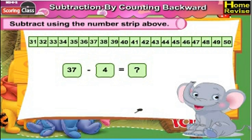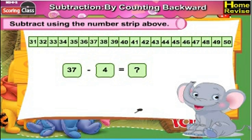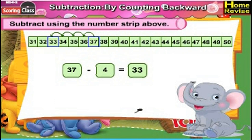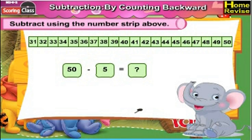37 minus 4: in order to find the answer, we need to subtract 4 from 37. Subtracting 4 means going four places back. From 37, you go four places back — that is 36, 35, 34, 33. So 37 minus 4 is 33.